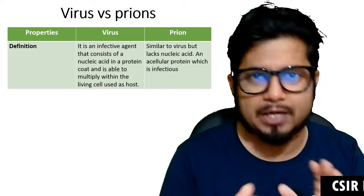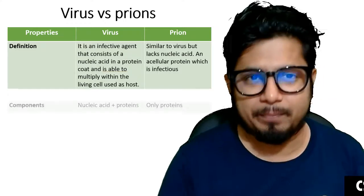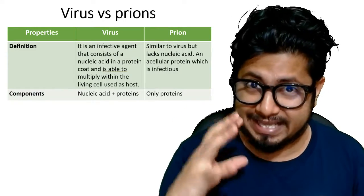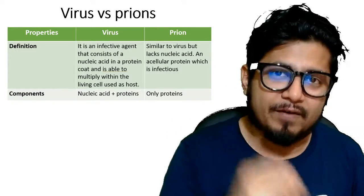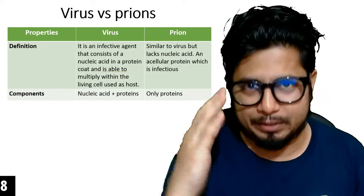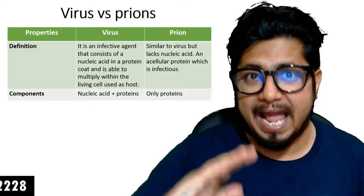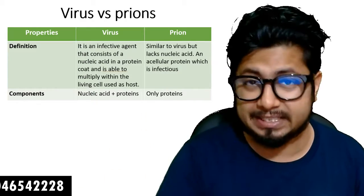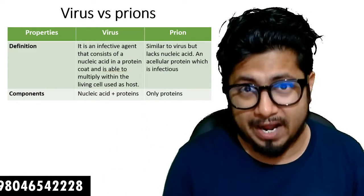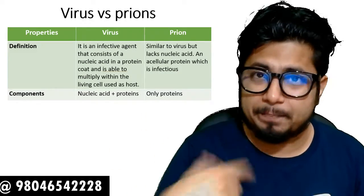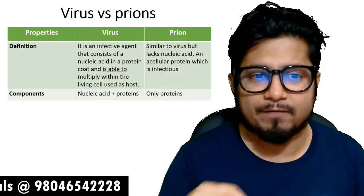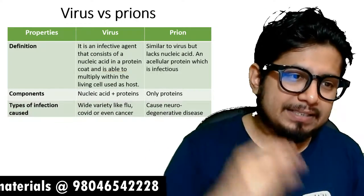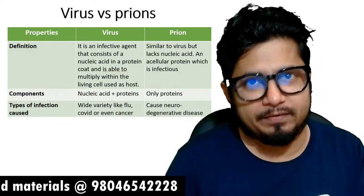The second important parameter is the components they have. Viruses have nucleic acid as well as proteins — the nucleic acid can be DNA or RNA. But prions have only proteins.